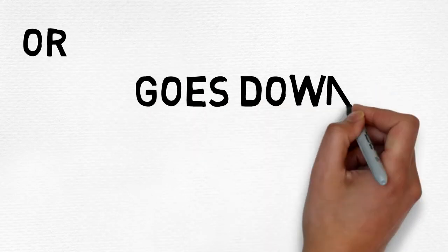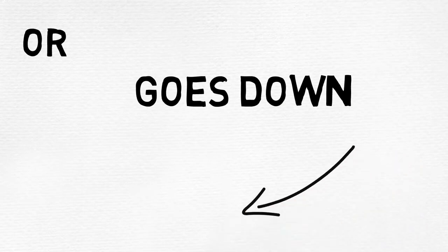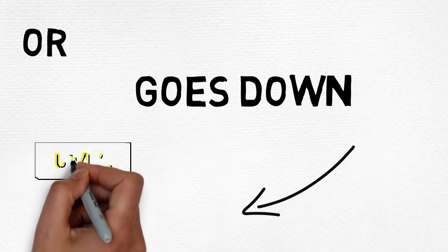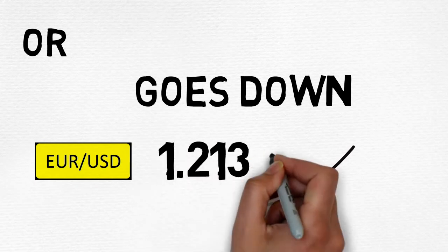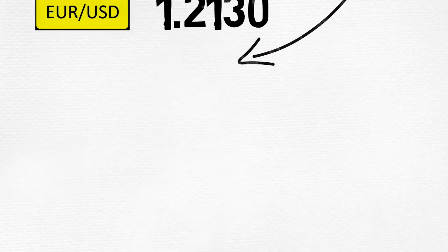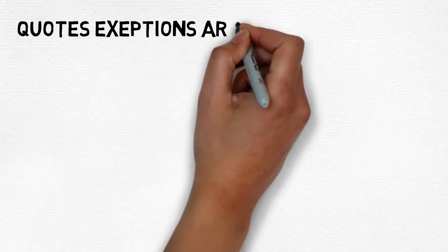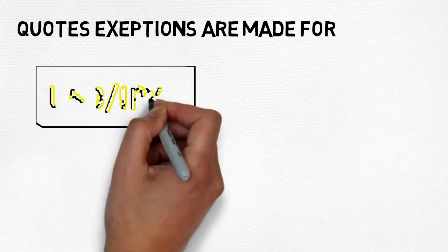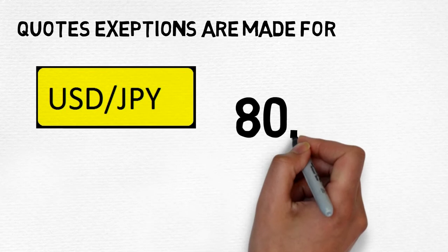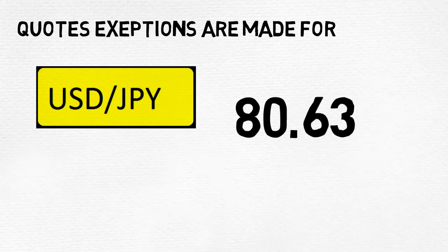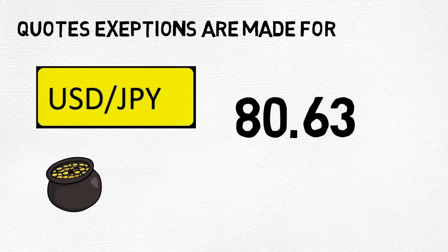When currencies are quoted — for example, Euro against the US dollar — they are quoted to the 4th decimal place, and so are silver and heating oil. Others, like the US dollar against the Japanese yen, gold, oil, Brent, and gas, are quoted to the 2nd decimal point.